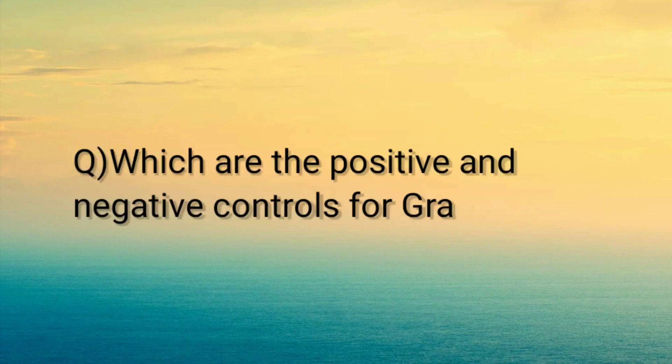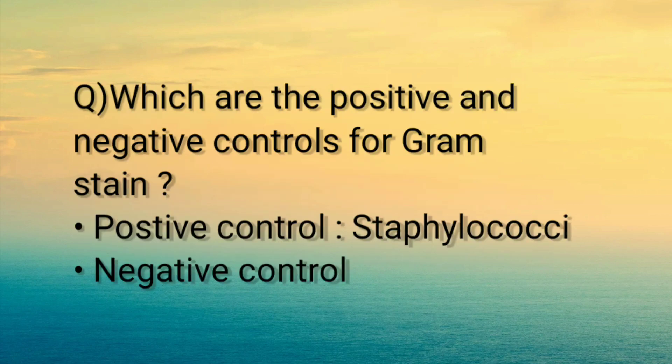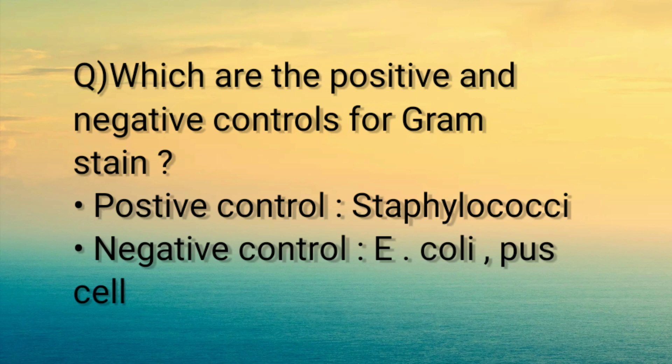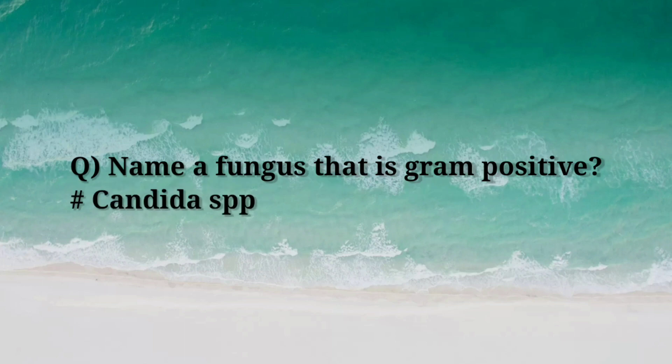Question: Which are the positive and negative controls for gram stain? Answer: Positive control — Staphylococci; negative control — E. coli, pus cells, etc. Question: Name a fungus that is gram positive. Answer: Candida species.